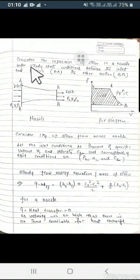Consider the expansion of steam in a nozzle under steady state condition between the inlet section to other section. We assume that in the nozzle expansion process is happening and steady state condition exists. Steady state condition means mass flow rate throughout the section should be constant. This is nozzle, this is section AA and this is section BB.